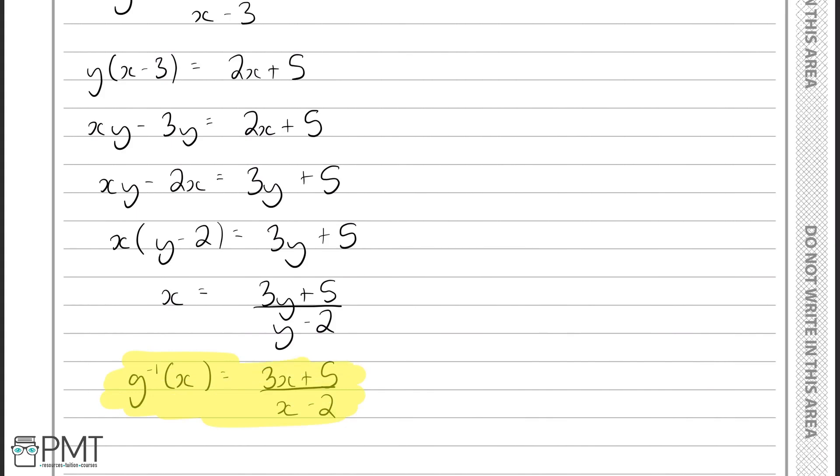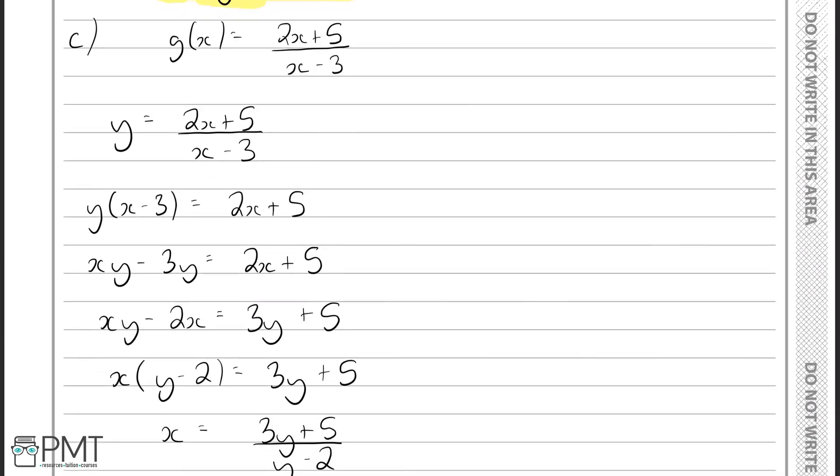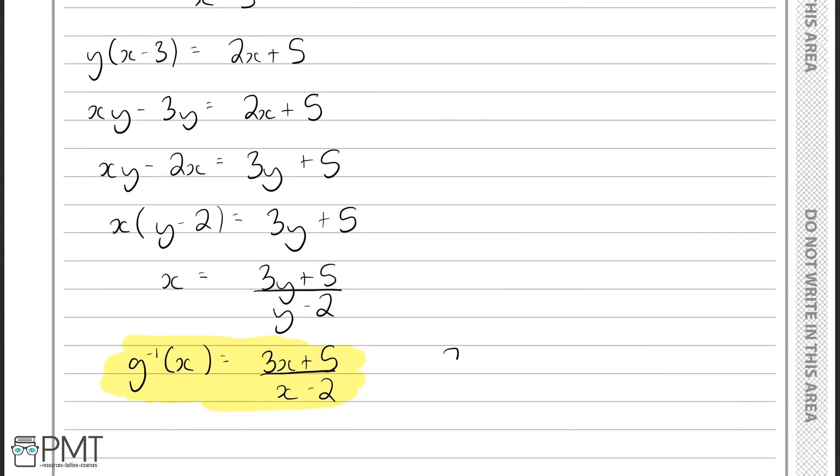But now the next part is that we need to find the domain of this function. Well, the domain of the inverse is simply the range of the original function. Which means that from part b, where we calculated the range of the first function, this is actually also the domain of the inverse. And all we have to do is replace the g of x with an x. And this will be the domain of the function g to the minus 1 of x.